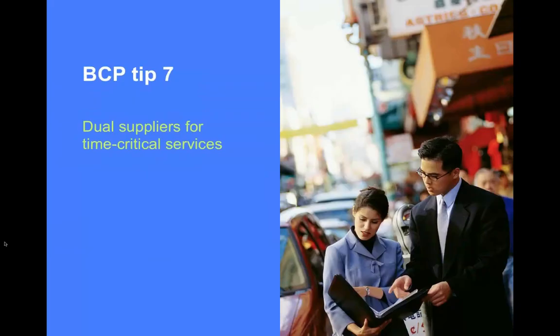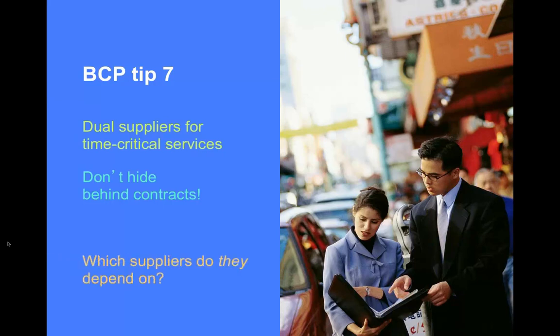Tip 7: Dual suppliers for time-critical services — that's your own responsibility. You can't hide behind contracts. Most organisations now know multiple suppliers are possible and hold you responsible for having those multiple supplier contracts in place. Also ask your suppliers: what is their business continuity plan, how do they do their BCP testing, and which suppliers do they depend on?